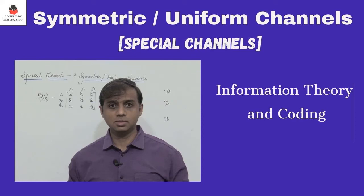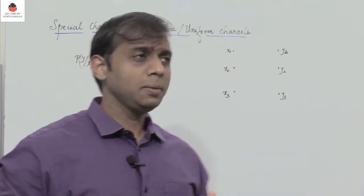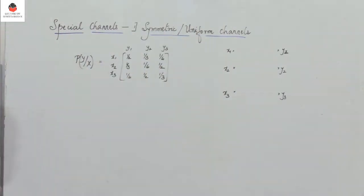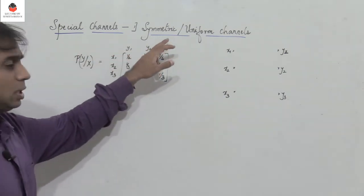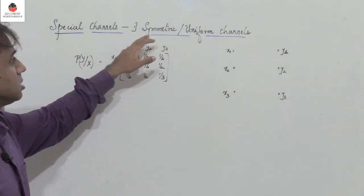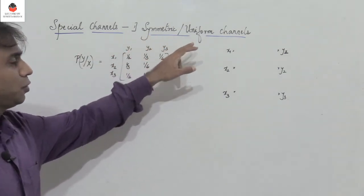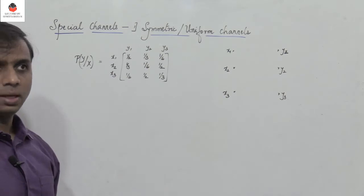Let's deal with special channels. When we study the various types of channels, we come across five to six kinds of special channels, and the first one we'll be dealing with is the symmetric or uniform channel.